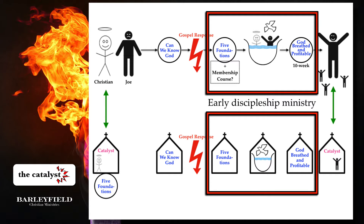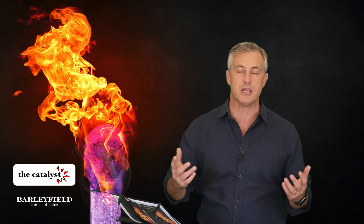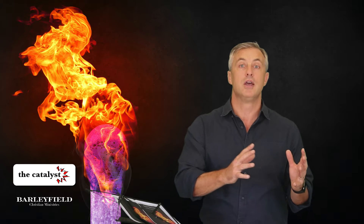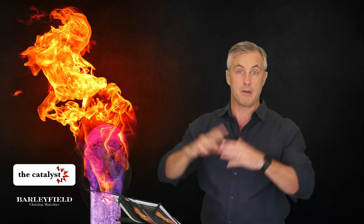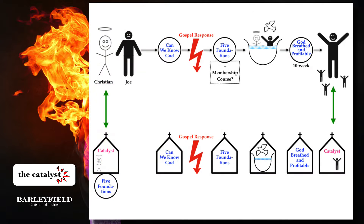If those events are being run centrally by the church with a constant cycle happening, that empowers a Christian as he's trying to make a disciple. Let's take Christian and Joe as an example. Instead of inviting Joe to do the Can We Know God course just with him — just the two of them — Christian now knows that in a couple of weeks the church is hosting a Can We Know God course, perhaps in someone else's home or at the church building.